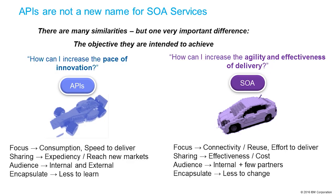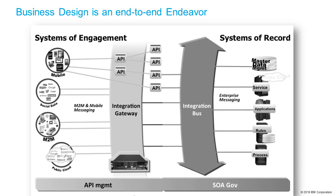The focus for APIs is about consumption and speed to deliver. It's about reaching new markets. The audience is internal, but more often it's going to be a larger number of external users. While we might start internally, the focus is to get these assets out to a much larger external community. It's really about less to learn, speed, and consumption — that's the focus for APIs.